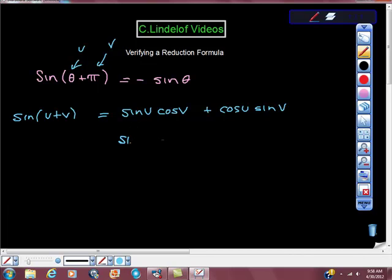So we take sine u, u is theta, so sine theta times cosine of pi, which is negative 1, isn't it, plus cosine u. Again, u is theta, so cosine theta, right? Sine of pi, sine of pi is 0, isn't it?